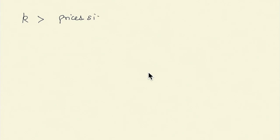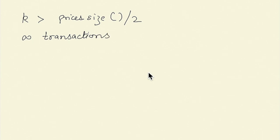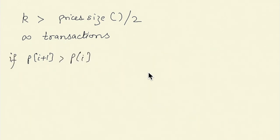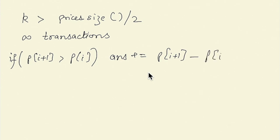Now let's consider a corner case: when we are allowed more transactions than prices.size divided by two. Let's consider the problem when we can buy and sell as many times as we want, as long as we sell the current stock before buying another one. We follow a greedy approach — whenever we can earn a little profit, we pocket it. This means if the price on the next day is greater than the current day, we add that profit to our answer, and this gives the optimal answer for infinite transactions.